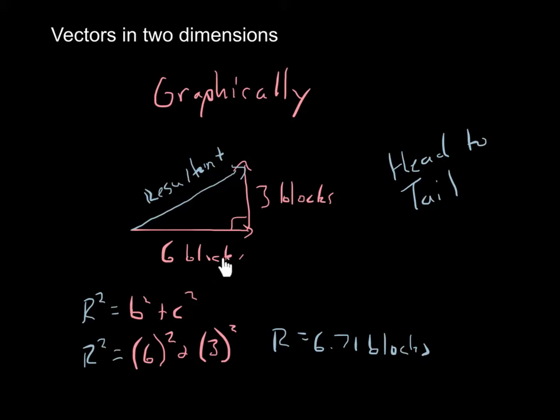Now notice a little detail here. Notice every vector on my triangle has the exact same unit, in this case blocks, that's very important. We can't mix, say, meters and meters per second into the same vector and add them together. It doesn't work like that. You have to have all meters, all meters per second. Whatever it is, it all has to be the same unit.